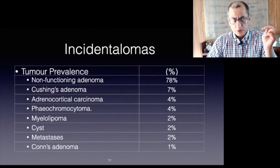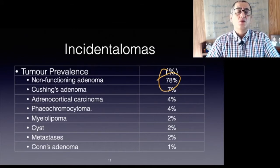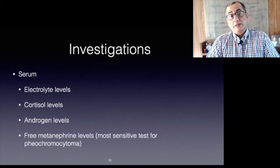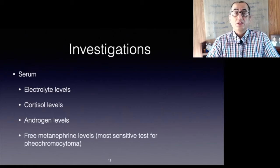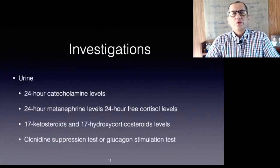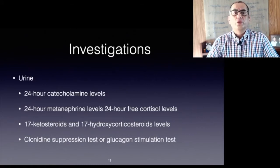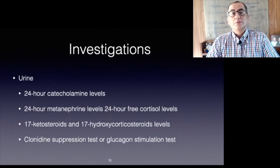More than 75 percent of these tumors are non-functioning, but Cushing's adenomas, pheochromocytomas, metastases, adrenocortical carcinomas, and Conn's tumors can all be found this way. Investigation includes serum electrolytes, morning and midnight plasma cortisol measurements, androgen levels, and free metanephrines. Twenty-four hour urine specimens measure catecholamines and metanephrine, which is the most specific test for pheochromocytoma, and VMA for medullary tumors. Cortisol and ketosteroid levels are useful for adrenal cortical tumors. If a pheochromocytoma is suspected, a clonidine suppression test or glucagon stimulation test can confirm the diagnosis.